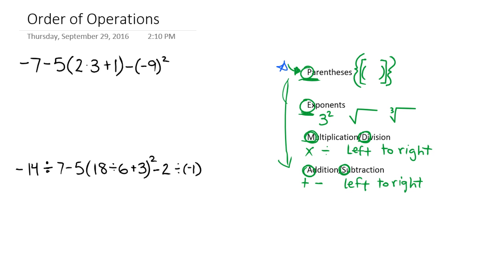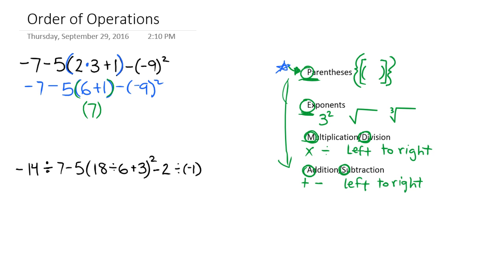So we look over here and say, okay, we need to start with our parentheses. Inside our parentheses, we now need to look and say, do we have any more parentheses inside? No. Do we have any exponents? No. Do we have any multiplication or division? Yes, we do. So we say 2 times 3 is 6, and then we drop everything else down. I know that this seems like a waste of time, but this will help you stay organized and help you avoid some of those little errors. Now if we look in the parentheses again, we still have addition that we can do. So 6 plus 1 is 7. Then we drop everything else down.